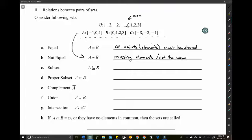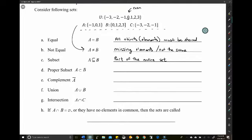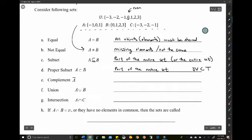If they are not equal, that just means that there are missing elements or not all elements are the same. A subset is part of the entire set or the whole set. Hence this little equal to sign. A proper subset is just part of the entire set, not the whole thing. Think of a baseball team. JV is a subset of the entire team.